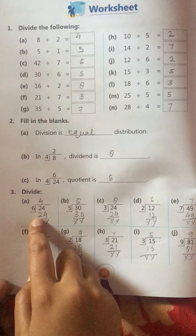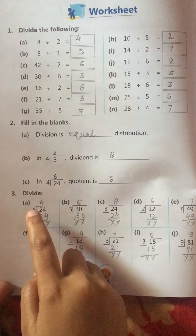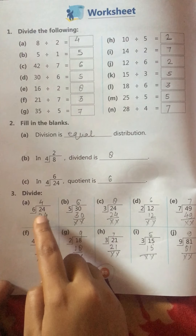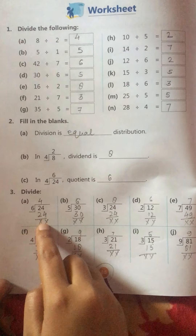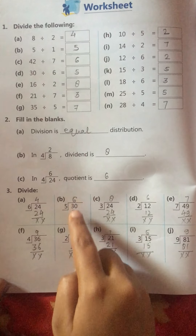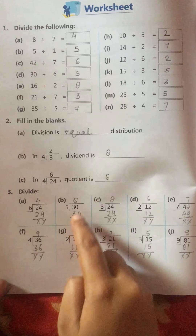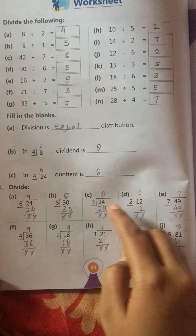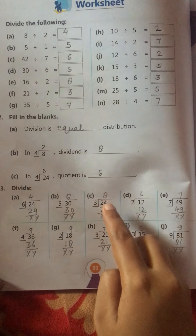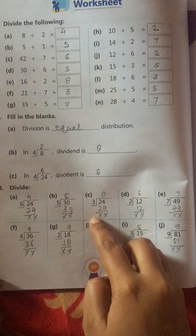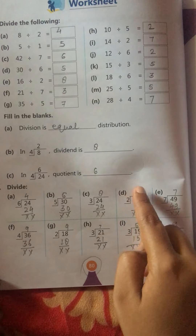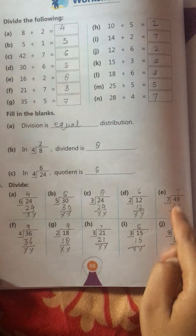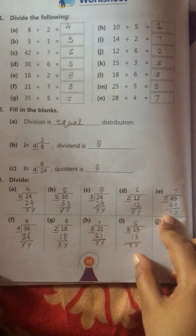Now divide: 24 divided by 6 equals 4, nothing remains. 30 divided by 5 equals 6, nothing remains. 24 divided by 3 equals 8. 12 divided by 2 equals 6. 49 divided by 7 equals 7.